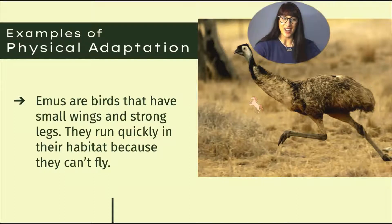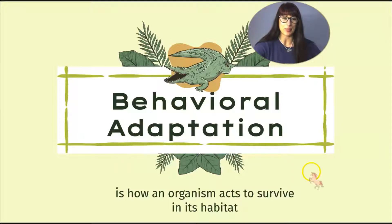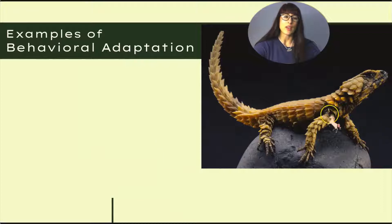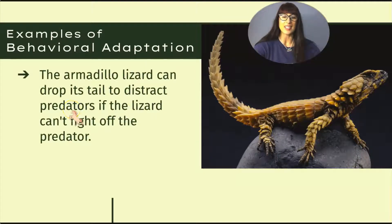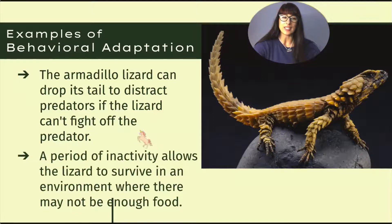Behavioral adaptation is how an organism acts to survive in its habitat — it's what it does, its behavior. We talked in class about the armadillo lizard. One behavioral adaptation it has is that it can drop its tail to distract predators. If the lizard can't fight off the predator, it simply drops its tail — that is one example of a behavioral adaptation.